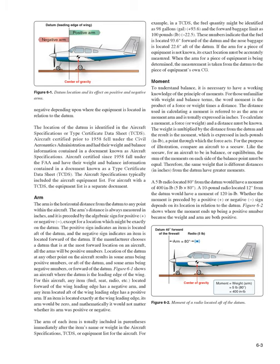Aircraft certified prior to 1958 fell under the Civil Aeronautics Administration and had weight and balance information contained in a document known as aircraft specifications. Aircraft certified since 1958 fall under the FAA and have their information in a Type Certificate Data Sheet (TCDS). The aircraft specifications typically included the aircraft equipment list; for aircraft with a TCDS, the equipment list is a separate document.